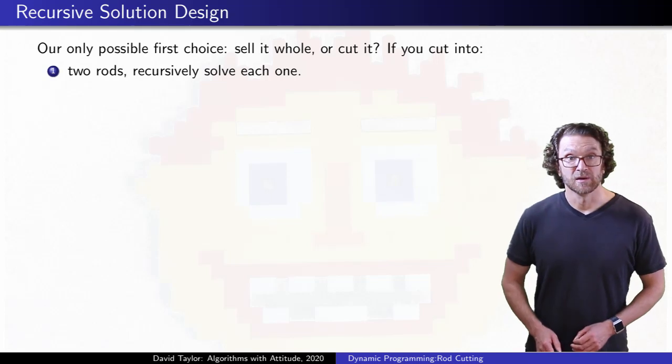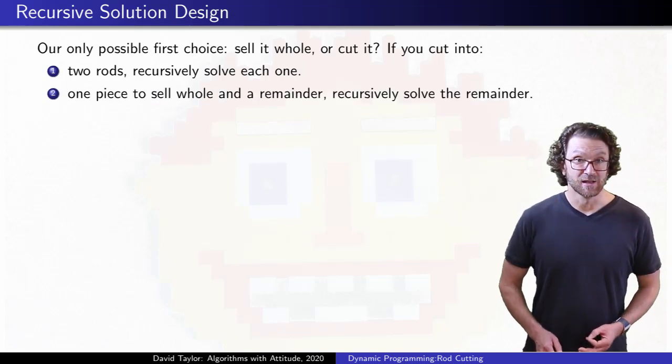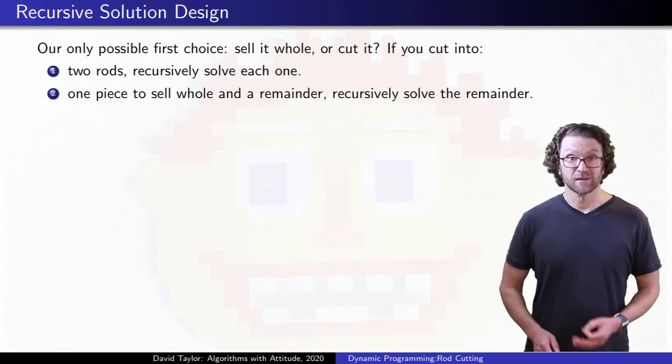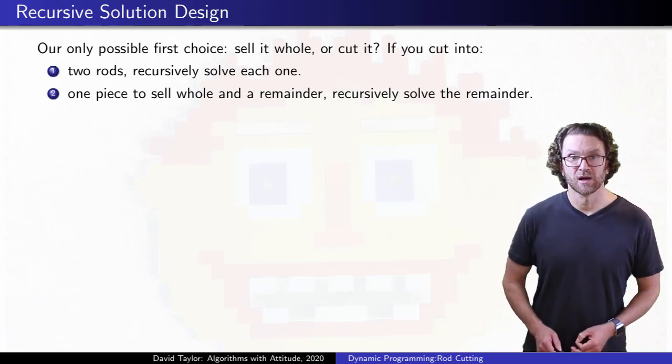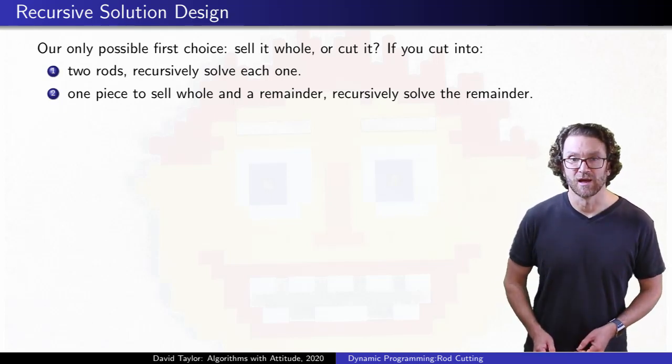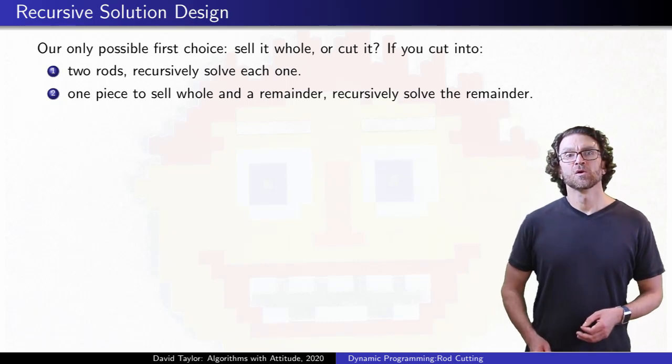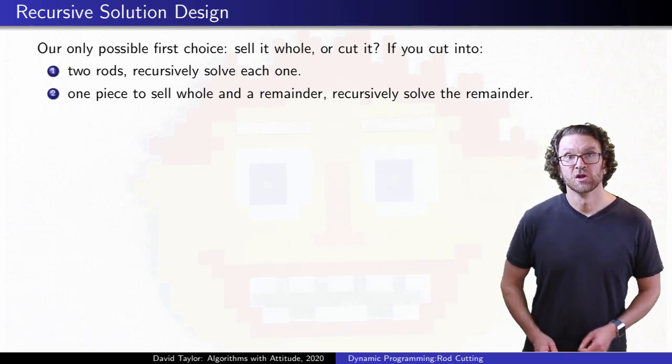A slightly different way to think about it is to pick a length of a rod to sell, cut a piece of that length to sell whole, and then recursively figure out how to cut and sell whatever is left after that. Those are two possible approaches. You can make either work.